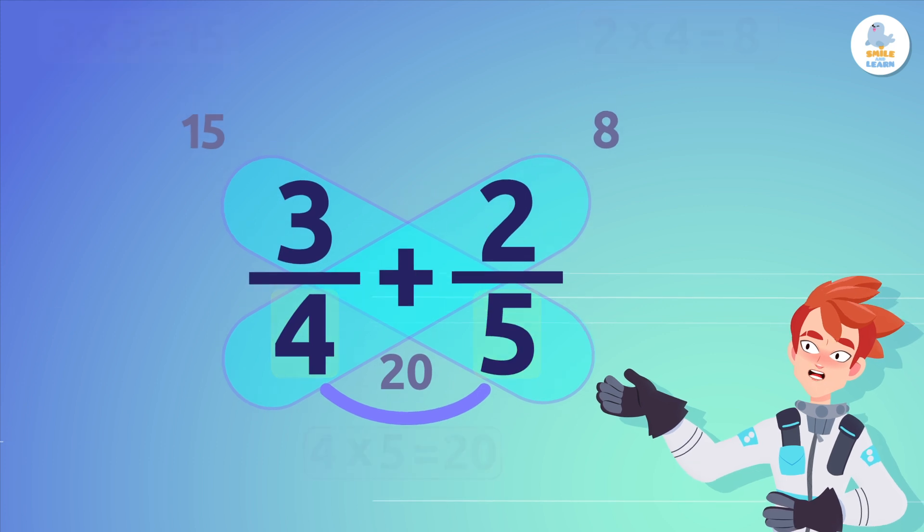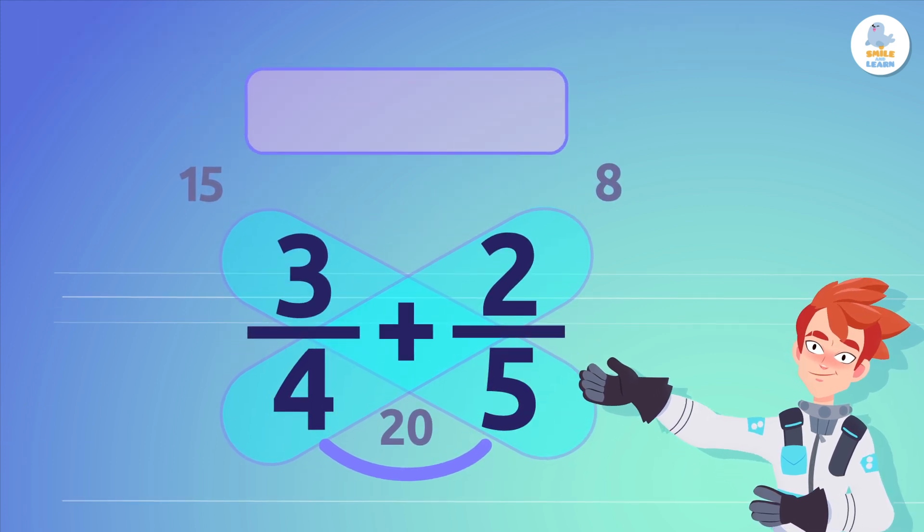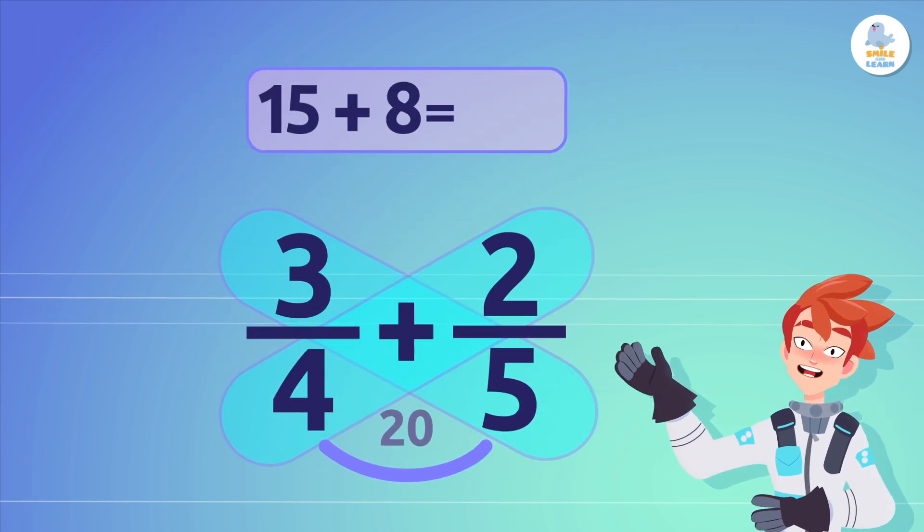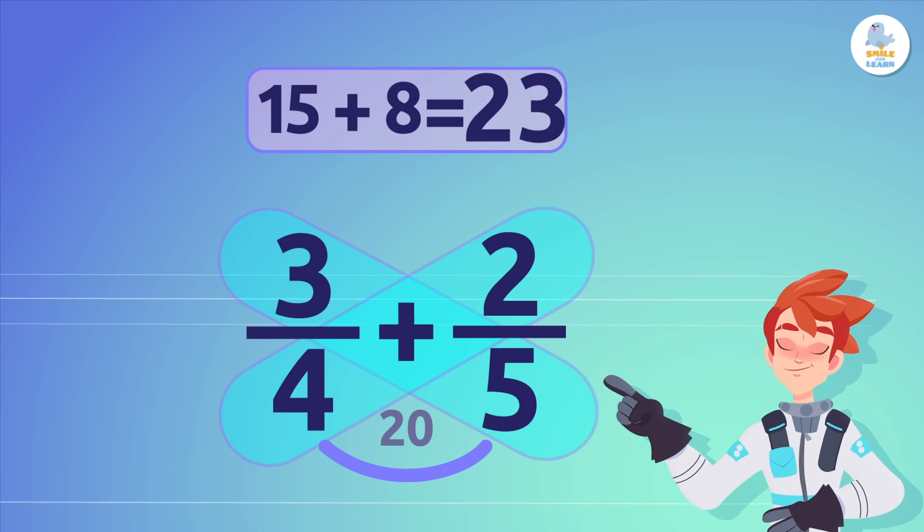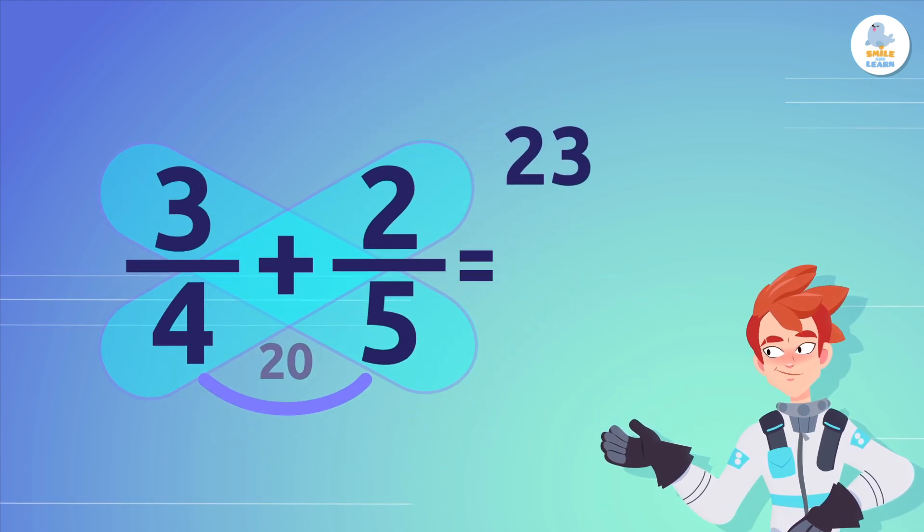Now, we add the products of the cross multiplications. 15 plus 8 equals 23, which is the numerator of our answer.